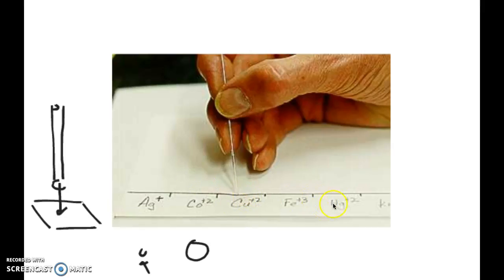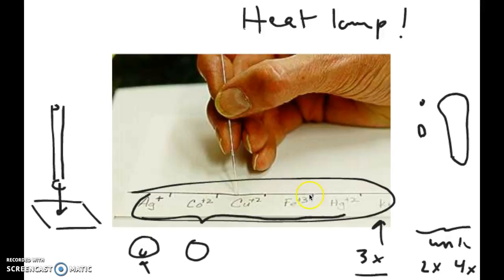Now there are some of these samples that need to be spotted a couple of times. If you're going to have to spot the sample a couple of times, in this case the known sample has to be spotted three times. Make sure you spot it and then dry it first. You can dry it either just by sort of waving the paper around, air dry it, or you can take it to a heat lamp.